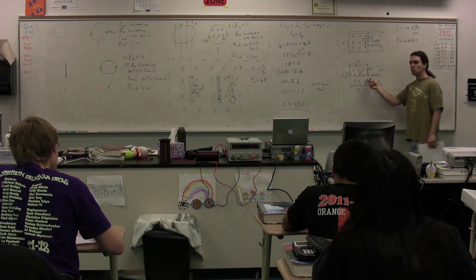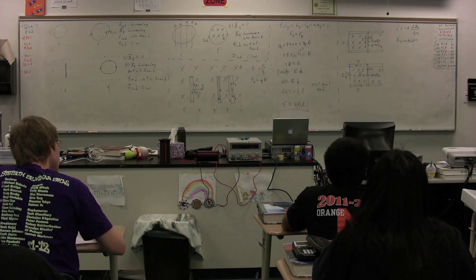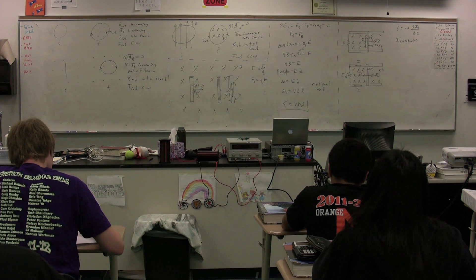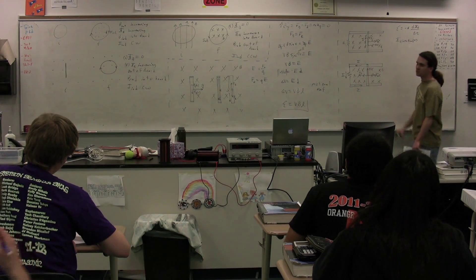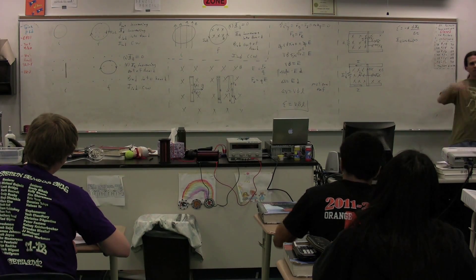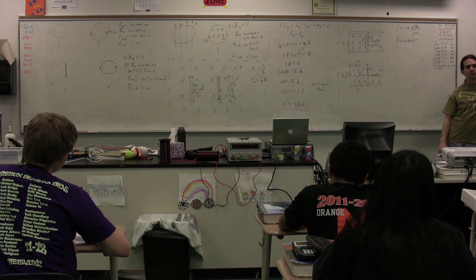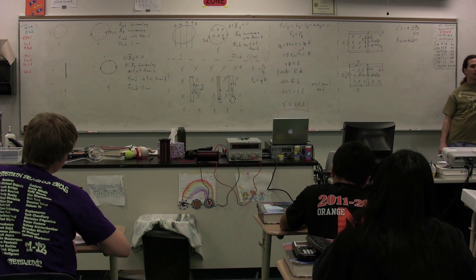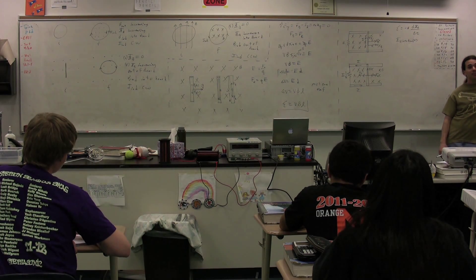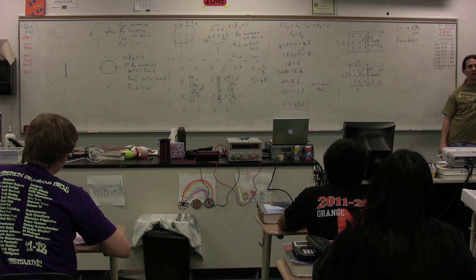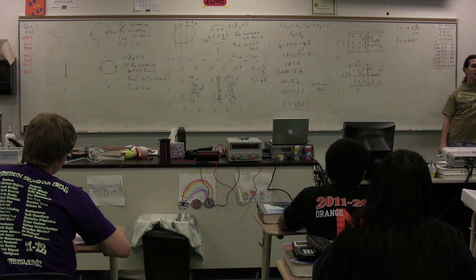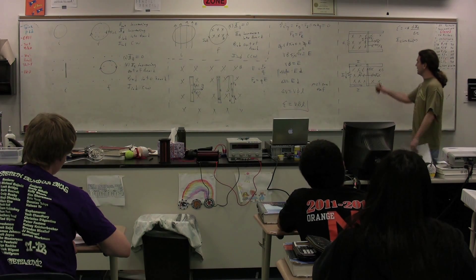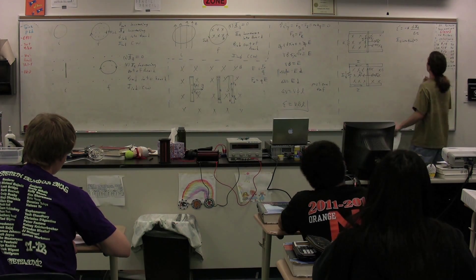As this moves to the right, what happens to the value of that magnetic flux? What happens to the value of the magnetic flux, the number of field lines going through that loop? The area increases, therefore, the flux increases. As the area increases and this moves to the right, the flux is going to increase.